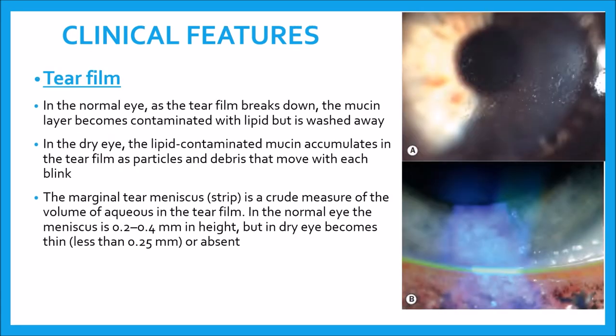Moving on to the tear film: in the normal eye, as the tear film breaks down, the mucin layer becomes contaminated with lipid but is washed away. In the dry eye, the lipid-contaminated mucin accumulates in the tear film as particles and debris that move with each blink, as seen in the first figure.